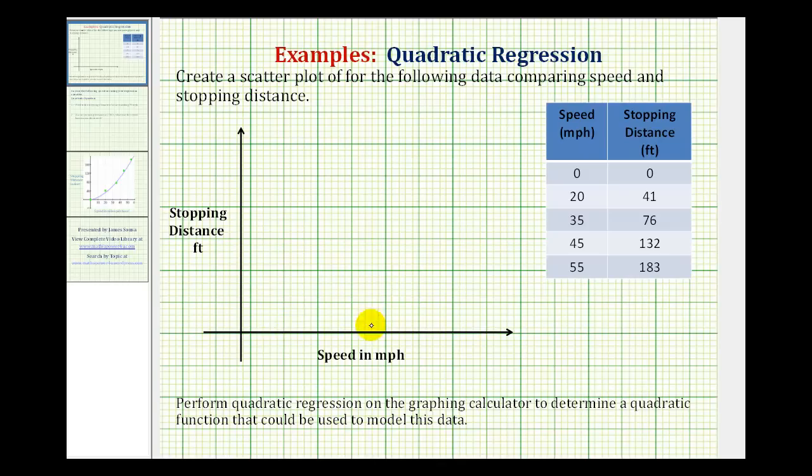So the first step is to scale the axes to accommodate the given data. Notice how the speed ranges from 0 to 55, and we'll actually label the x-axis from 0 to 80. So half of 80 would be 40, half of 40 is 20, so this would be 60. Again, this is in miles per hour.